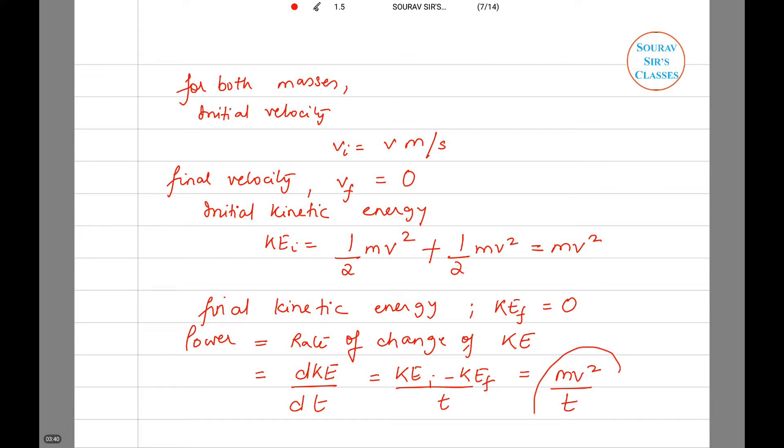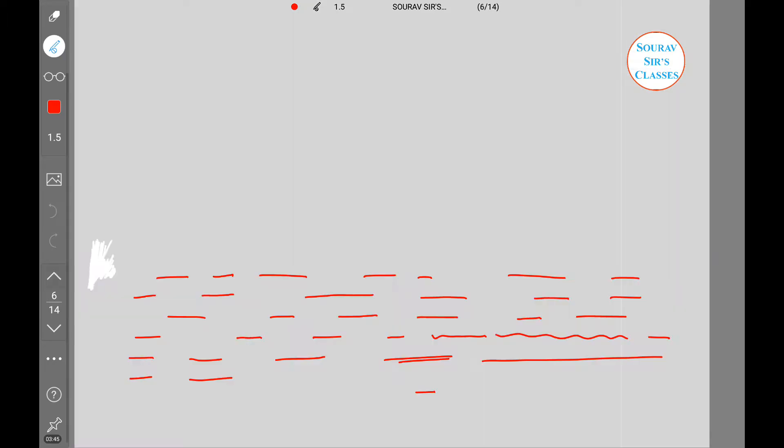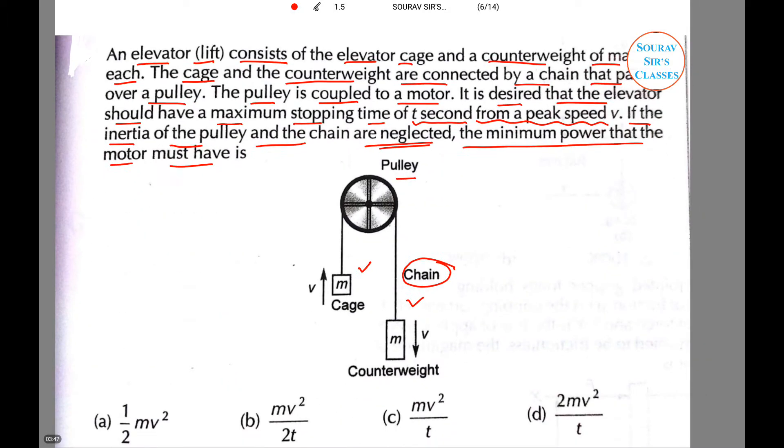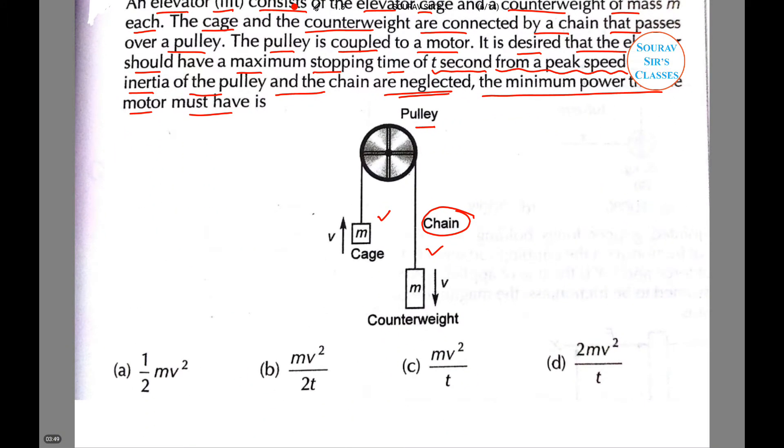So this is the power or the rate of change of kinetic energy. Now let us look at the options. Looking at the options, it is clear we got a value of power to be mv²/t and this exactly matches with option number c. So option c is the correct answer to this particular question.